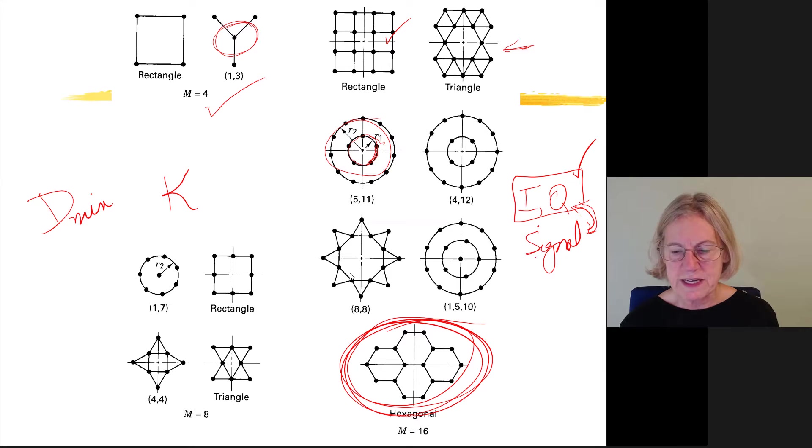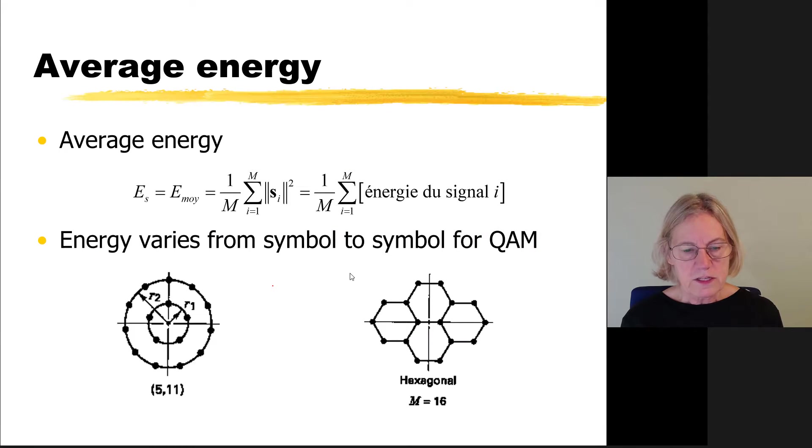And once I have the geometry straight, then I have to convert it and go to signal space with the right normalization. Because once I'm in signal space, then I can find dmin. Remember, dmin has no meaning unless I'm in signal space where everything is in terms of Eb or Es, the average energy per symbol or the average energy per bit. So what is the definition of the average energy per symbol? It's quite simple. Es we call it, and it's just 1 over M, and then we sum up all of the different energies.